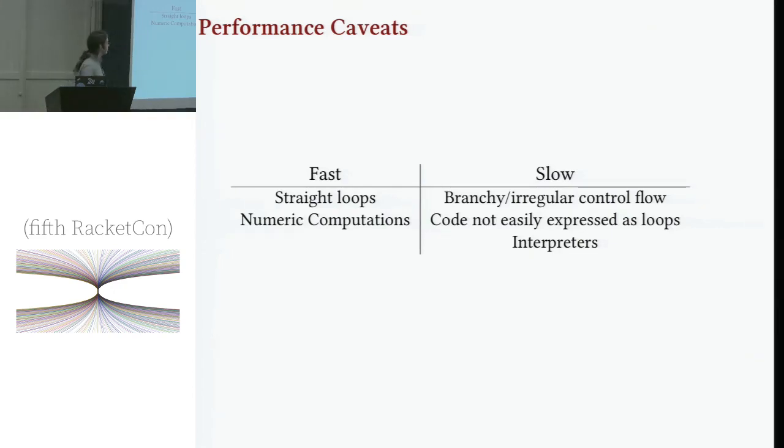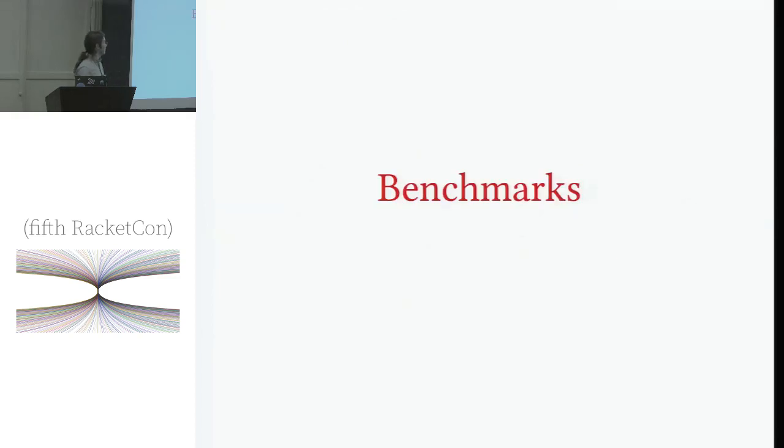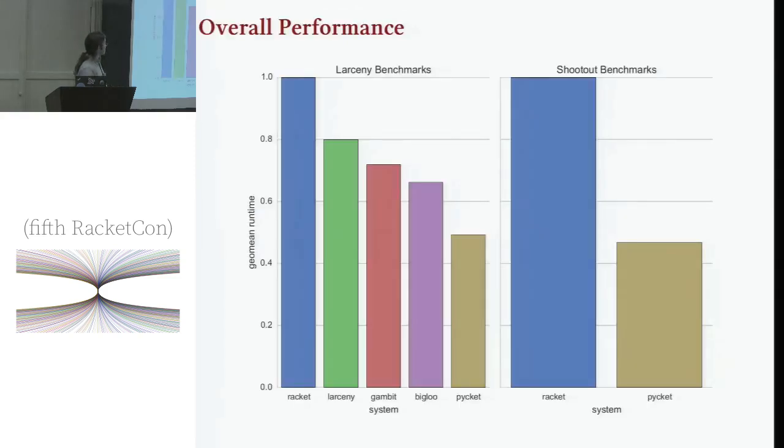The canonical example is anything that looks like an interpreter, something with one loop that has hundreds of cases dispatching to various handler functions is typically a bad performance spot for tracing JITs. But anything that fits into straight loops or numerical computation, we're excellent at. We definitely win at least all the numerical benchmarks.